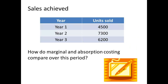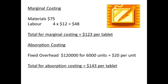We need to know the sales over the period in question. In year 1, sales are 4,500 units. Year 2, they are 7,300. And year 3, the sales are 6,200. Using marginal costing, we have materials at $75, and 4 hours of labour at $12 per hour. The total for marginal costing is $123 per tablet. The figures for absorption costing will take into account the overheads, which will add a total of $20. That means the total for absorption costing will come to $143 per tablet.